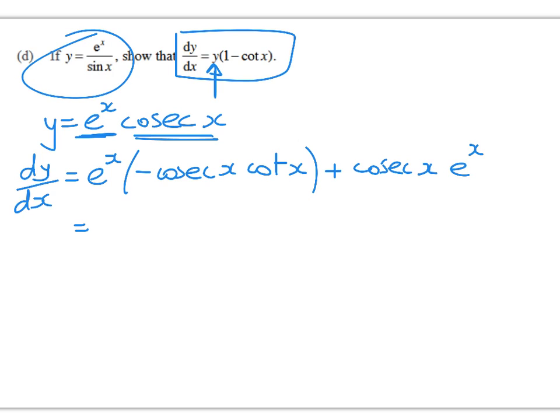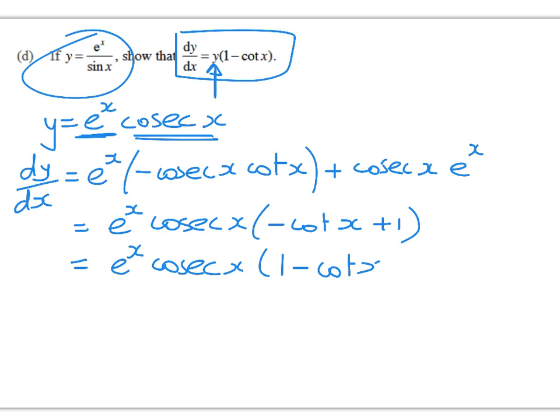So what does that give me? Well, you can take out a common factor of e^x cosec x times negative cot x plus 1. Now, it's a show that question, so we want to make sure that there are no leaps in logic, so that the marker is not sitting there going, oh yeah, this student just wrote down the answer and hoped for the best. So we'll do it properly. Now, this is just y times 1 minus cot x as required.